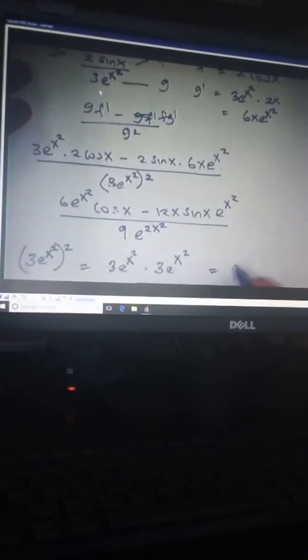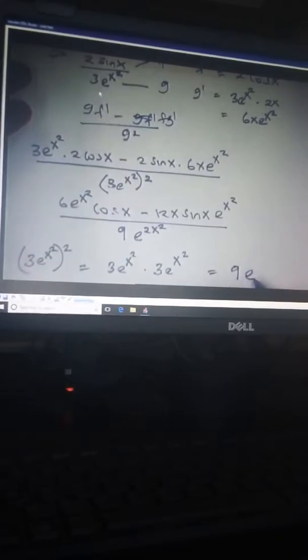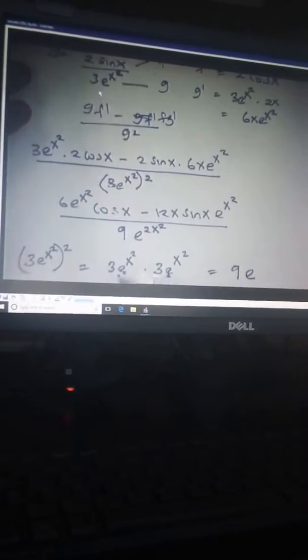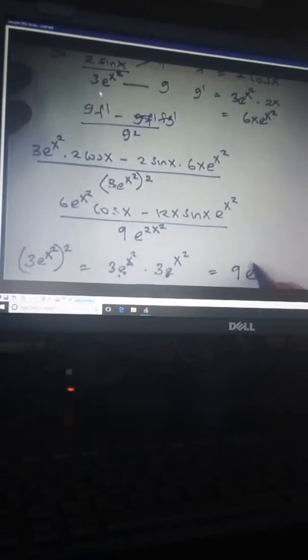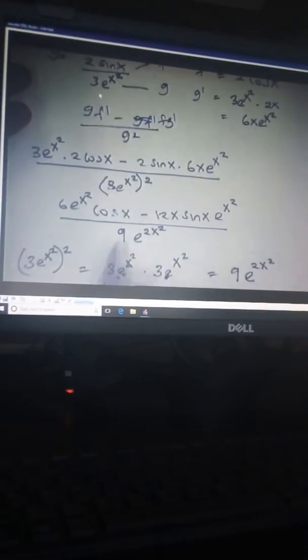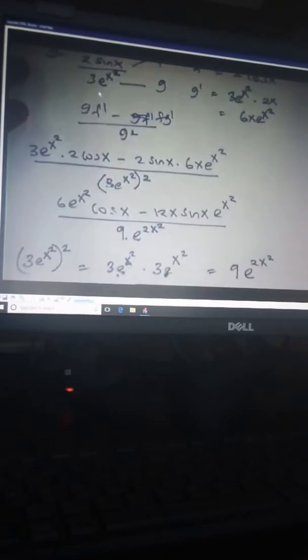So 3 times 3 will be 9. e to the power stays the same, you add the powers: x² plus x², that's why you get 2x². That's how we get 9e^(2x²).